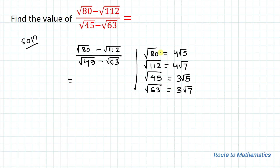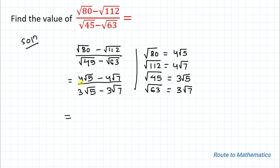Now we substitute the simplified values into the given problem. We get (4 root 5 minus 4 root 7) divided by (3 root 5 minus 3 root 7). In the numerator, both terms have 4 in common, so we take 4 out as a common factor, giving 4(root 5 minus root 7).